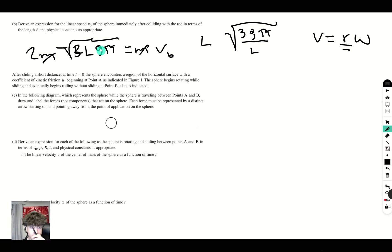All right, so let's take a look at the other parts of the problem. After sliding a short distance, at time t equals 0, the sphere encounters a region of the horizontal surface with a coefficient of kinetic friction mu. Beginning at point A as indicated in figure 1, the sphere begins rotating while sliding and eventually begins to roll without sliding at point B as also indicated. The following diagram is referencing to the sphere while the sphere is traveling between points A and B. Draw and label the forces, not components, that act on the sphere. Each force must be represented by a distinct arrow starting on and pointing away from the point of application on the sphere.